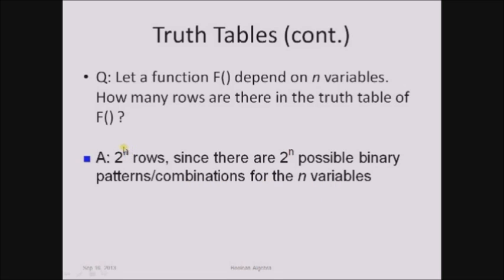If there are 3 input variables, the possible combinations are 2 power 3, which equals 8. This is how we represent the truth tables.